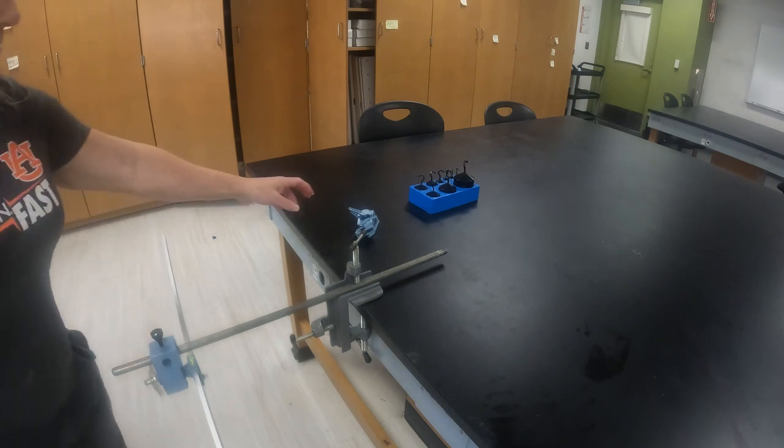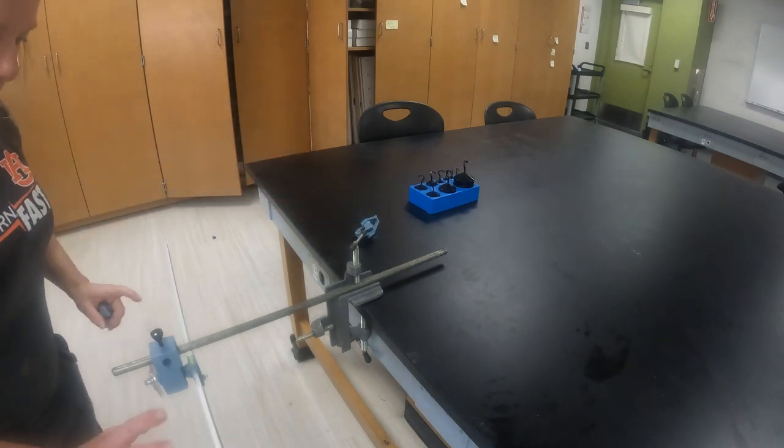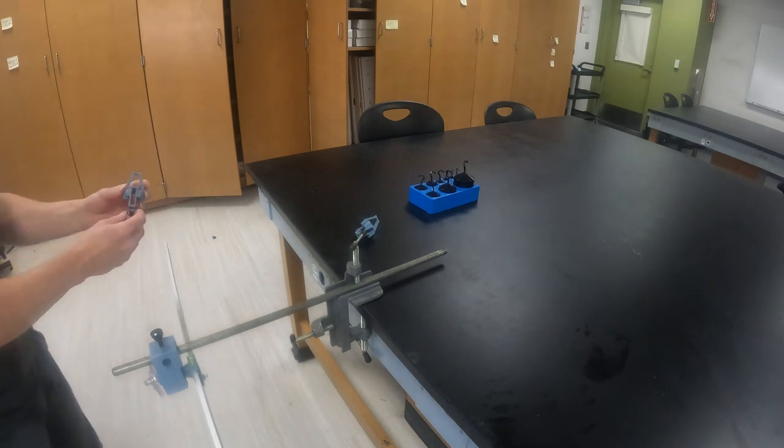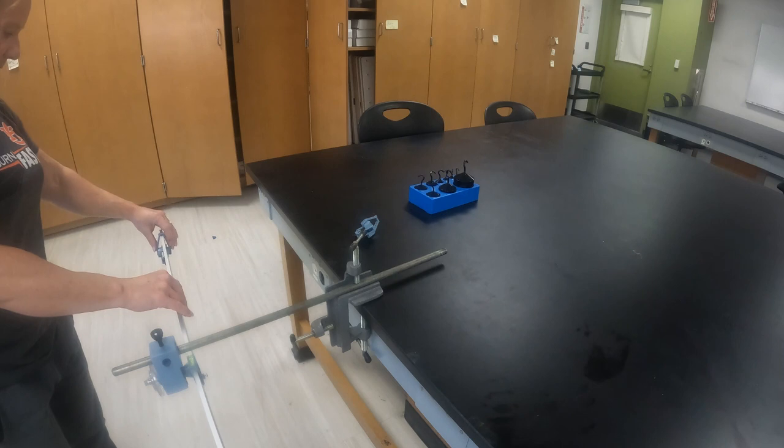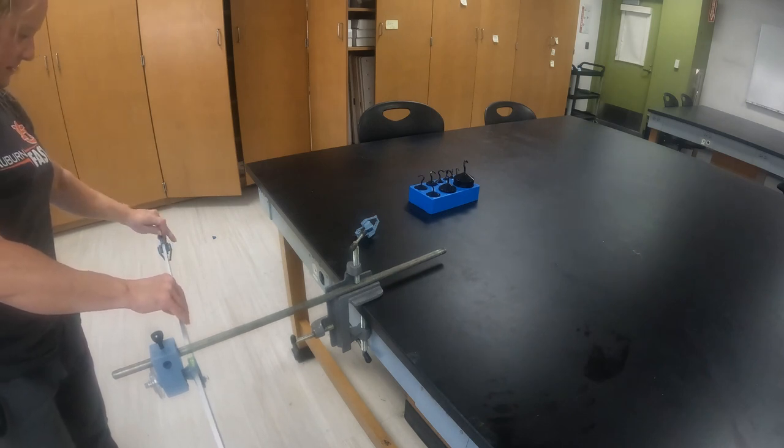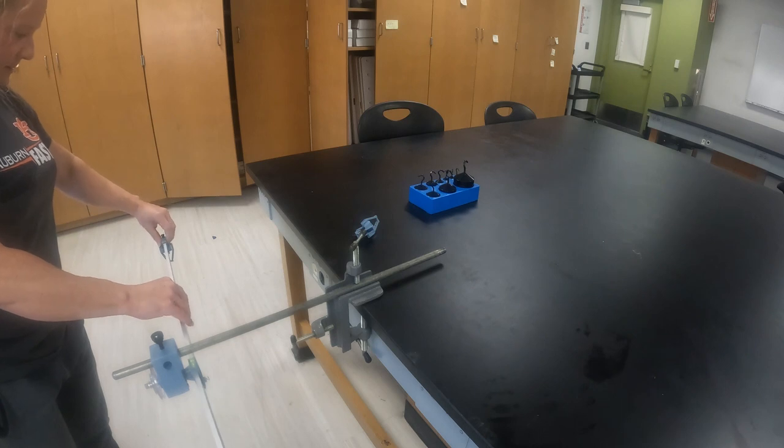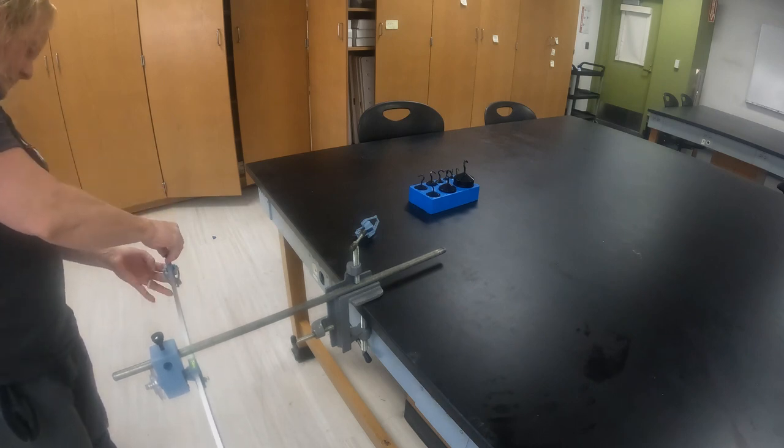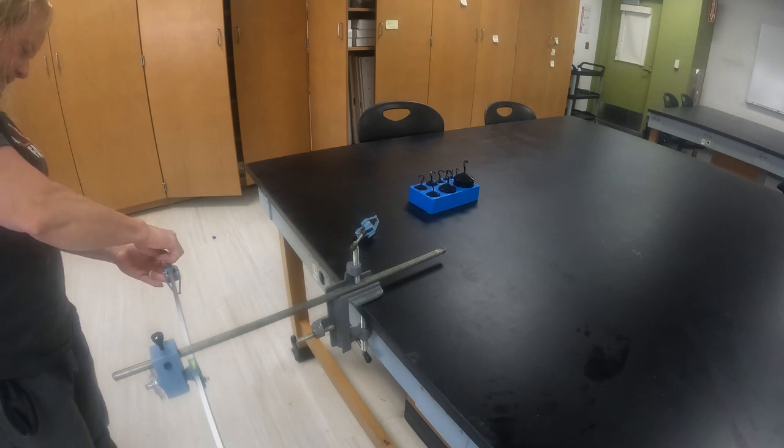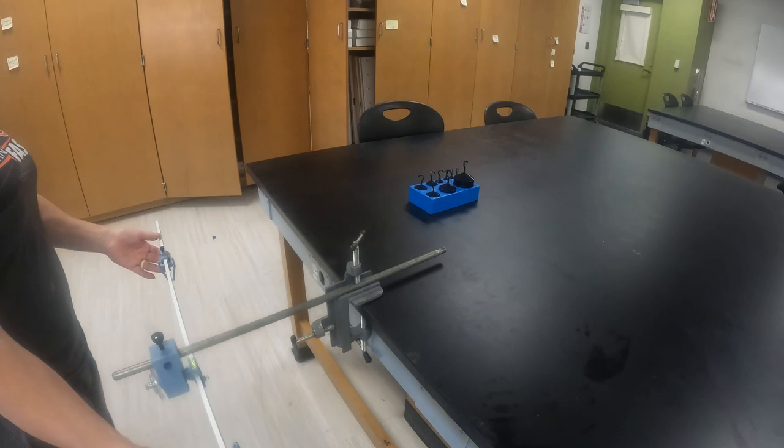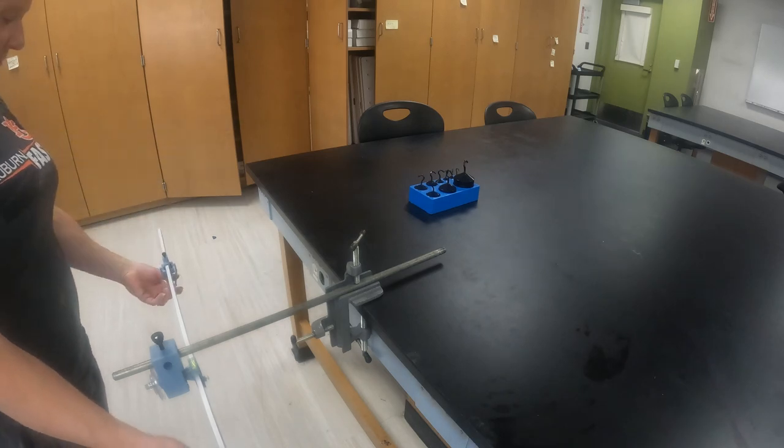Once we are satisfied with where the center of mass is, we can then take our mass holders, slide them onto a meter stick, and tighten them wherever we want them. Do this on both sides, and then use the hanging masses to hang from the bottom.